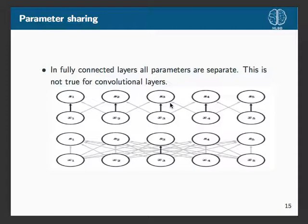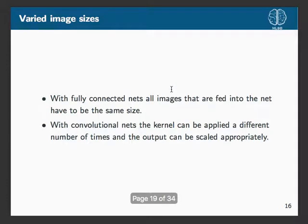In fully connected layers all parameters are separate, which is not the case for convolutional layers — that's parameter sharing. When we take a kernel and apply it in multiple different places, that has parameter sharing effects. Another advantage is handling varying image sizes: with convolutions we can actually control exactly what our output will be, even without a fixed input size.